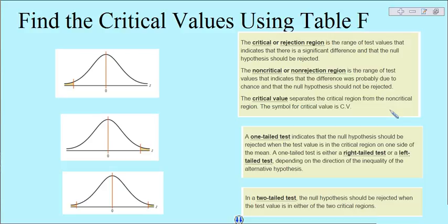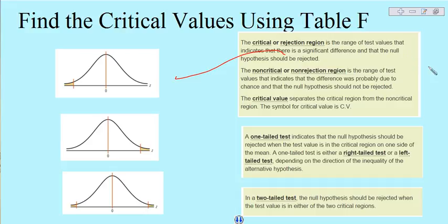We have a left-tailed test, and in this case you can see this shaded area right here would be called our critical region. I'm just going to put CR for critical region. And then over here, the non-shaded would be our non-critical region.